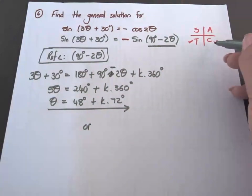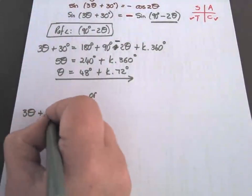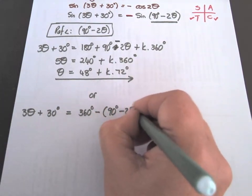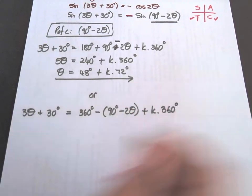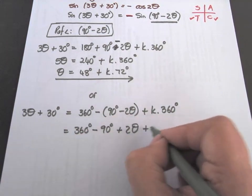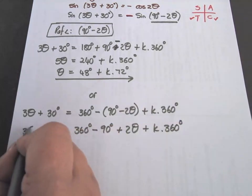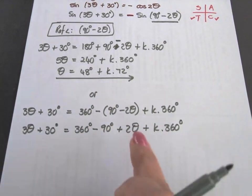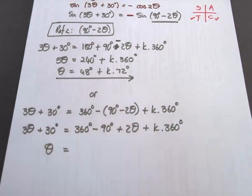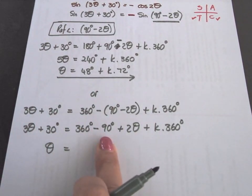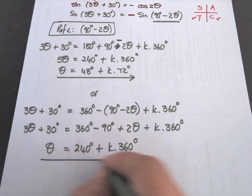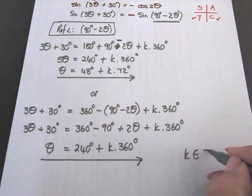Or, the 4th quadrant: 3 theta plus 30 degrees equals 360 minus the reference angle 90 minus 2 theta, plus k times 360. Taking 2 theta to the left — it goes negative, and 3 minus 2 gives 1 theta. 360 minus 90 is 270; 270 minus 30 is 240 degrees, plus k times 360. And k is an element of Z.